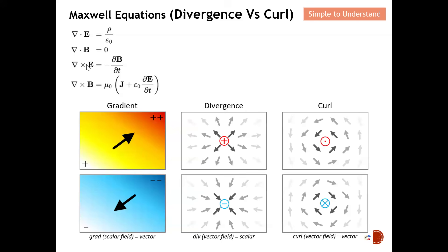Next is the concept of curl. From the picture you can see that the field actually turns around the electric or magnetic field — this is what we call the curl. For example, the curl of the electric field, and the curl of the magnetic field. So to recap: divergence describes how a field radiates out or in from a point, while curl describes how a field rotates around a point.